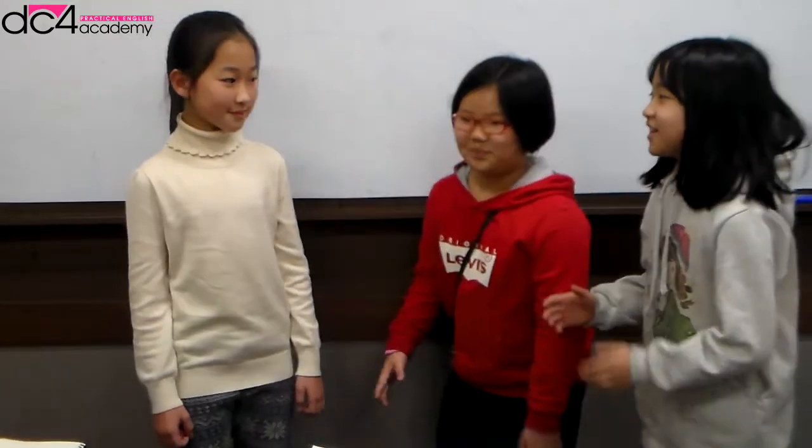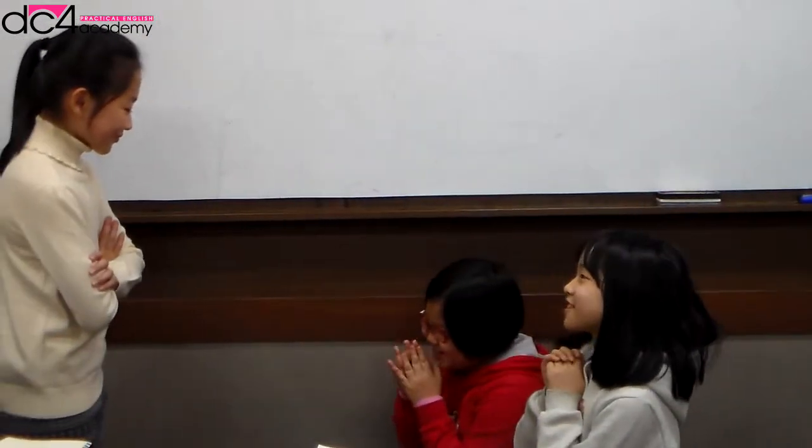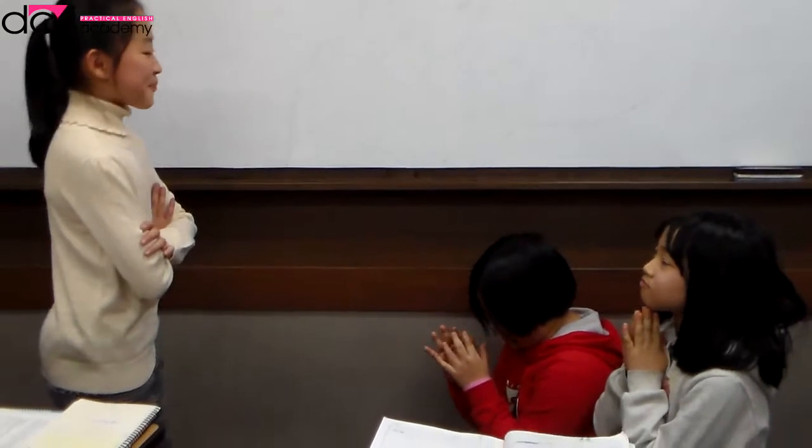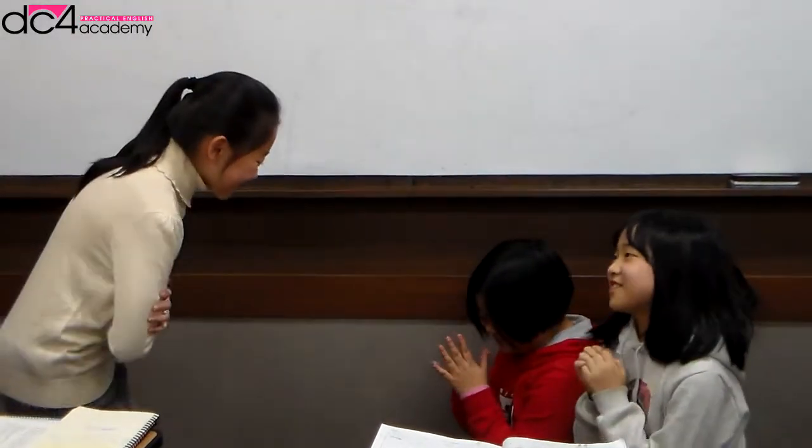Our last hand gesture is crossing our arms. If you cross your arms around your chest making an X sign, it means that you are angry. You usually use that hand gesture when you are disappointed or when you punish someone, like this. Sorry, we are very sorry. I am so disappointed in you. Sorry.